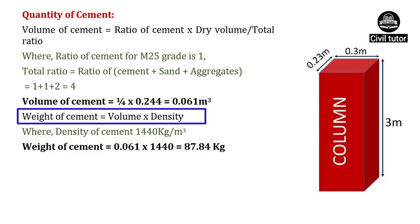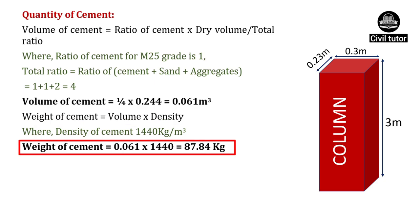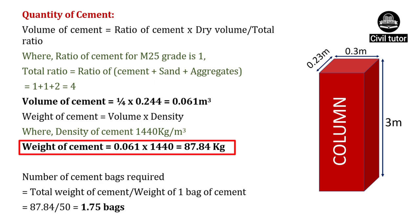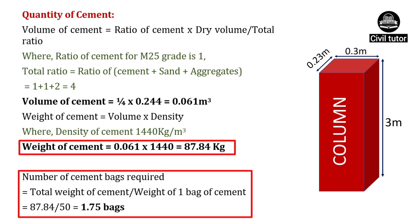Weight of cement equals volume into density, where density is 1,440 kg per meter cube. Substituting, weight of cement equals 87.84 kg. Since the weight of one bag of cement is 50 kg, the number of cement bags required equals 87.84 divided by 50, which gives 1.75 bags.